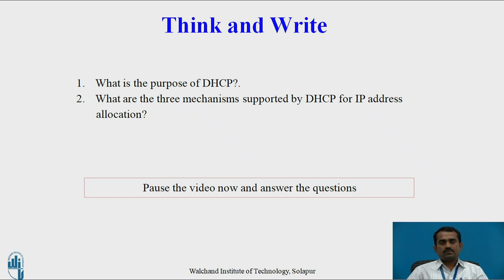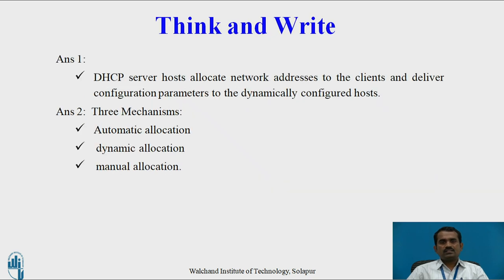Think and write. This section contains two questions: What is the purpose of DHCP? Second, what are the three mechanisms supported by DHCP for IP address allocation? Now pause the video and answer the above questions. The answer for the first question: DHCP server host allocates network addresses to clients and delivers configuration parameters to the dynamically configured host. The answer for the second: the three mechanisms are automatic allocation, dynamic allocation, and manual allocation.